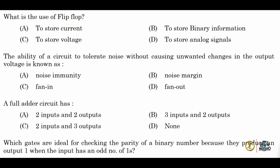Next: what is the use of a flip-flop? Flip-flops are used to store binary information — that is, 1s and 0s. Option B is the correct answer. Next: the ability of a circuit to tolerate noise without causing unwanted changes in the output voltage is known as noise immunity. Option A is correct.